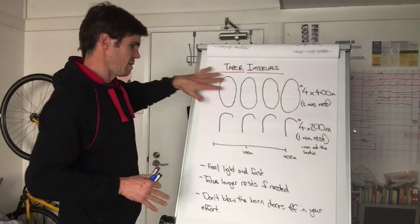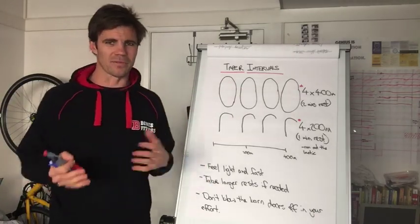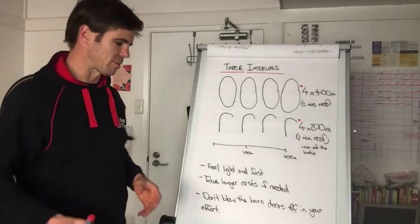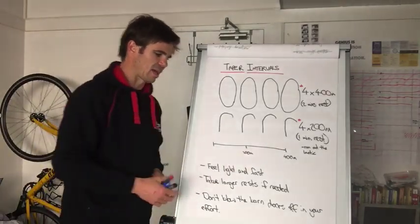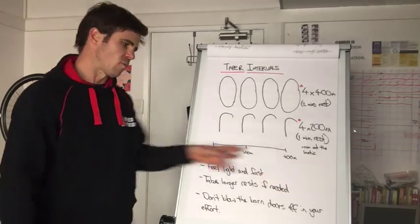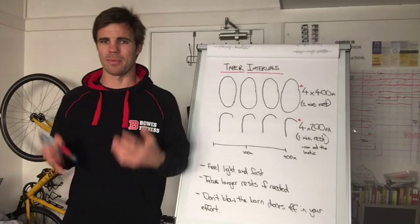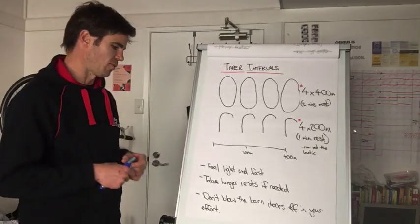Now, this is set up to be running on a 400m track. If you don't have a 400m track available to you, that absolutely doesn't matter. You can do it on a linear course. You go, start here, 400m out, 400m back, out back, and then your 200s the same way.